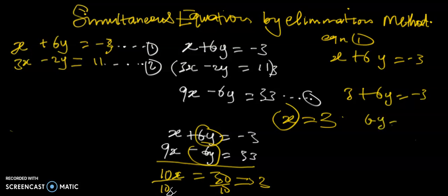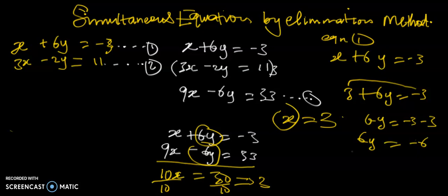So 6y is equal to negative 3 minus 3, because when we take the 3 to the other side it becomes negative. Negative 3 minus 3 is negative 6. So 6y equals negative 6. Divide all through by 6: negative 6 divided by 6 gives negative 1. So y is equal to negative 1.